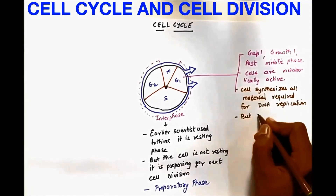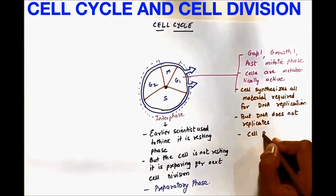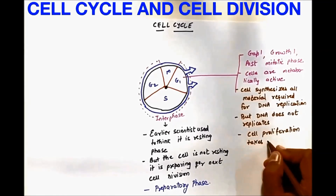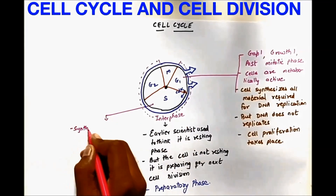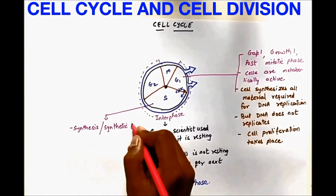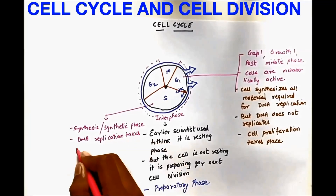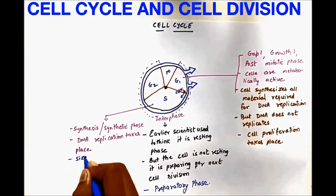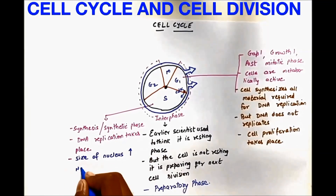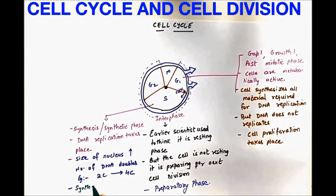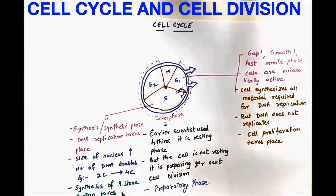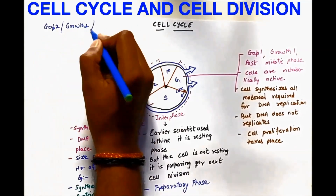Cell proliferation takes place in G1. Once G1 phase is over, CDKs check the required rates and the cell enters S phase — the synthesis or synthetic phase — where DNA replication takes place, the size of the nucleus increases, and the number of DNA doubles. For example, if there is 2C it becomes 4C. Most importantly, there is synthesis of histone proteins if it is a eukaryotic cell.